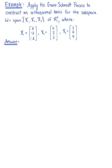Apply the Gram-Schmidt process to construct an orthonormal basis for the subspace W equal to the set spanned by vectors x₁, x₂, x₃ of R³.